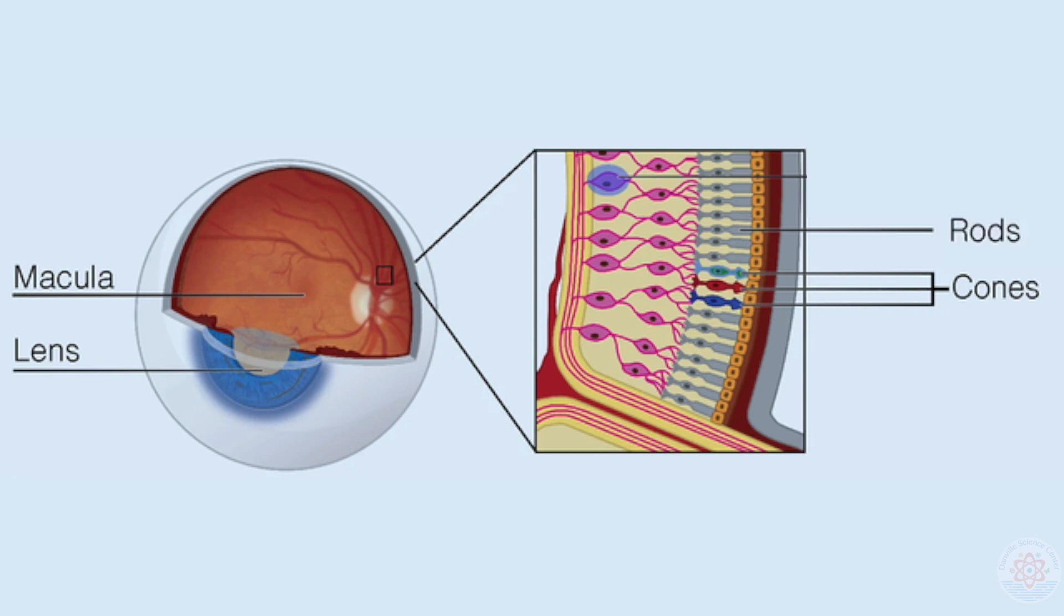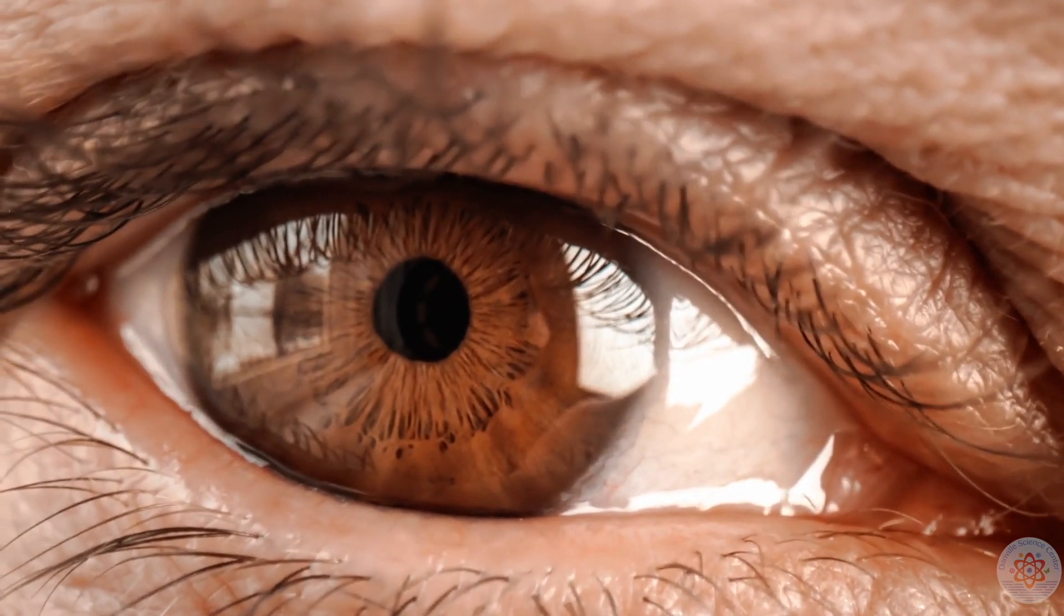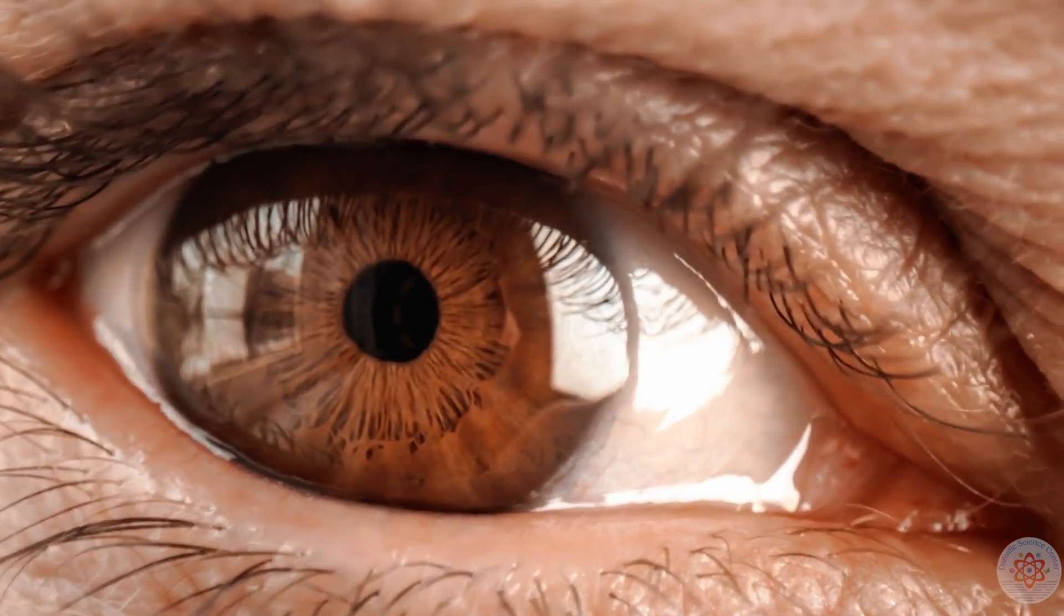Rods take over in low-light conditions. Scotopic vision. They help us to see when it is dim but are not as effective at distinguishing color. Mesopic vision is what happens in between when light is dimming and your rods and cones work together.